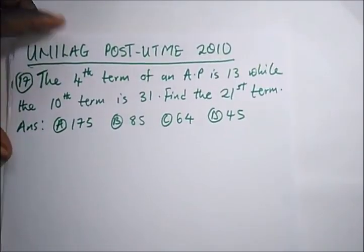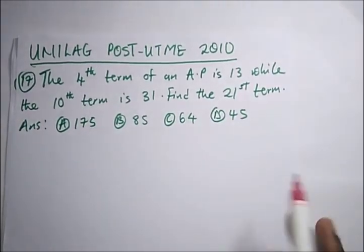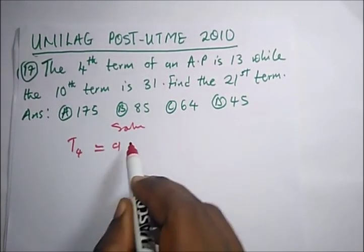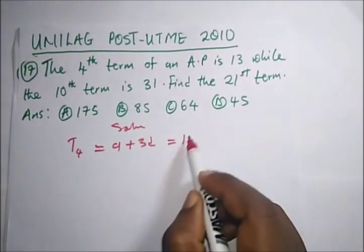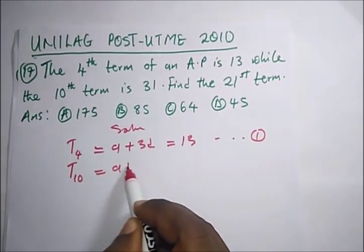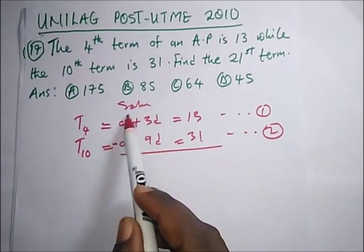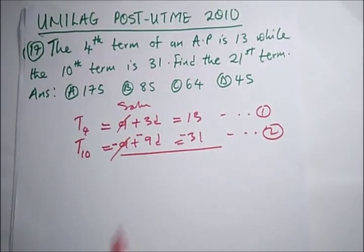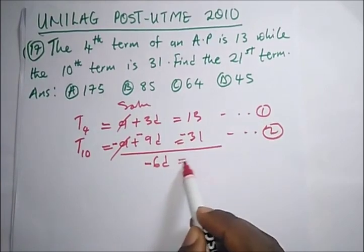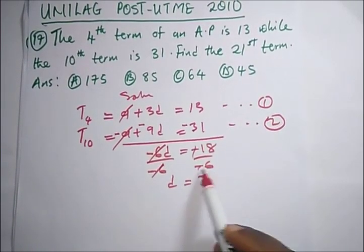Question 17: the fourth term of an AP is 13 and the tenth term is 31; find the 21st term. Using the AP formula, T₄ = a + 3d = 13 (equation one) and T₁₀ = a + 9d = 31 (equation two). Subtracting equation one from two: 6d = 18, so d = 3.